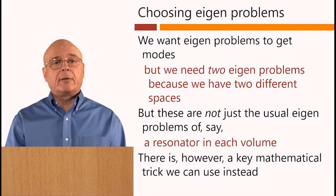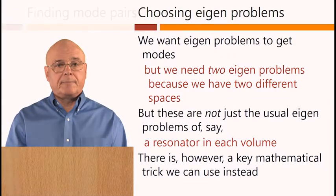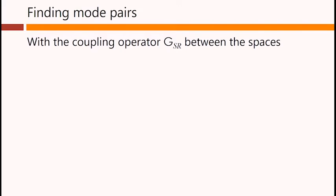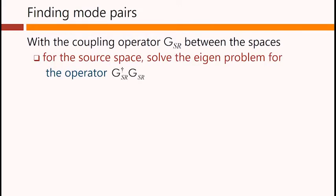There is, however, a key mathematical trick we can use instead. With the coupling operator GSr between the spaces, for the source space, we can solve the eigenproblem for this different operator, the product of G dagger sr and GSr.